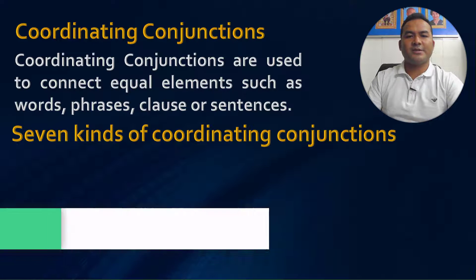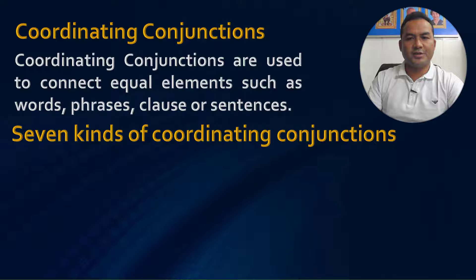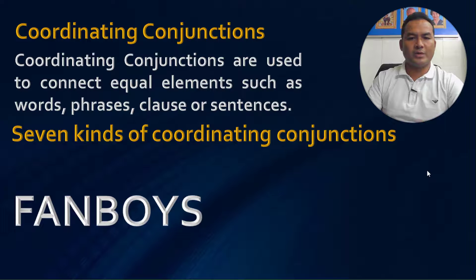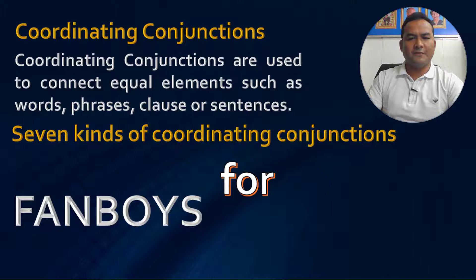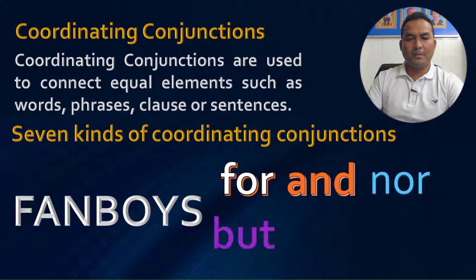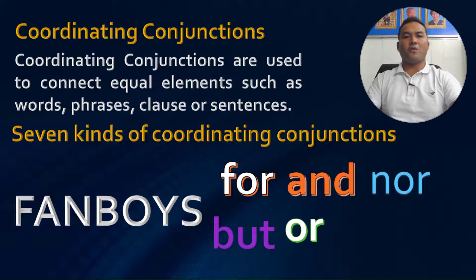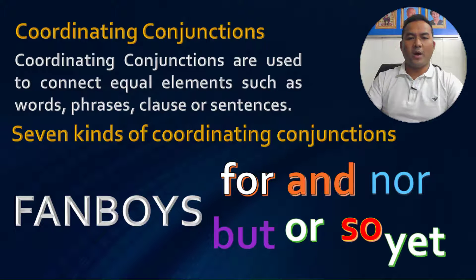There are seven kinds of coordinating conjunctions in English. As you know, sometimes we call them FANBOYS. In FANBOYS: F is for 'for,' A is for 'and,' N is for 'nor,' B is for 'but,' O is for 'or,' Y is for 'yet,' and S is for 'so.'